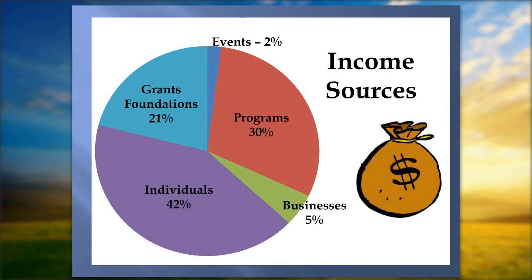A pie graph of your income sources is really helpful and should be in your business plan. Last year, Brook Hill Farm's income breakdown was: programs 30%, businesses 5%, individual donations 42%, grants and foundations 21%, and events 2%. Looking at this, I can easily see I need to work on events and I'm not tapping the business community hard enough at only 5%. Many grant applications ask for your income source percentages, so having this in your business plan lets you pull it straight into a grant.